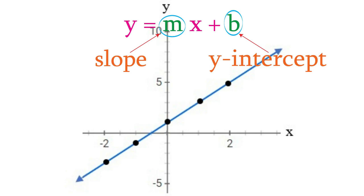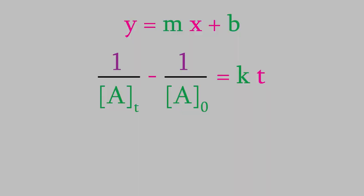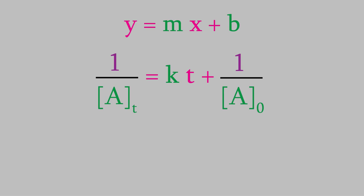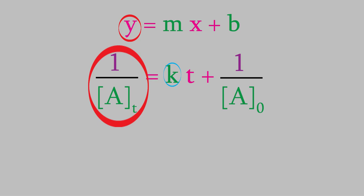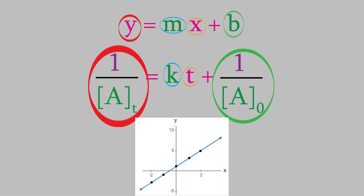Here's how we do it. Remember, a straight line has the form y equals mx plus b. Here's the equation of a second-order reaction. If we move the second fraction to the right side of the equal sign, the resulting equation has the same form as the equation of a straight line. Instead of y, the left side has 1 over AT. On the right side, we have k, which is a constant just like m. Next, we have t instead of x. And finally, we have 1 over A0 instead of b. So this second-order equation is similar in form to the equation for a straight line. That means if we have data for a second-order reaction, we can make a graph with time on the x-axis and 1 over AT on the y-axis. That should give us a straight line with a slope equal to k, the rate constant, and a y-intercept of 1 over A0.